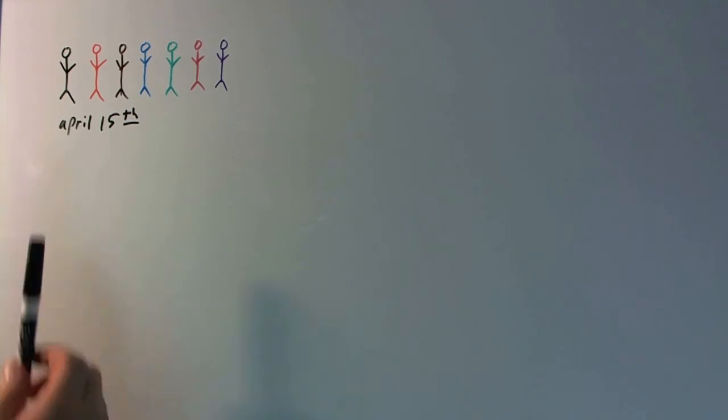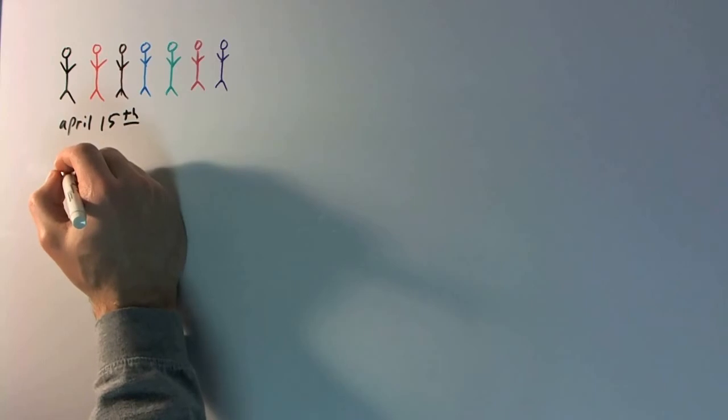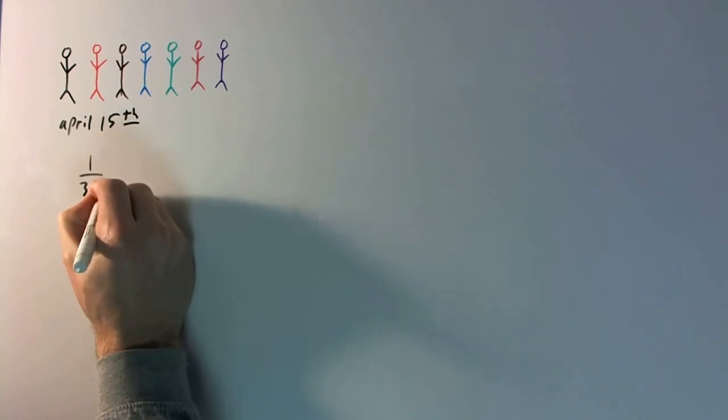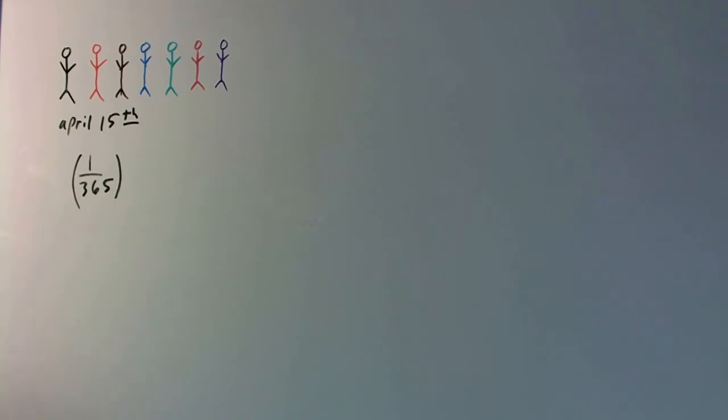So what's the probability that the first guy here has a birthday on April 15th? Well, it's only one day out of the entire calendar year, 365 days, so therefore the probability will be one out of 365. Big shock right there. So the probability that this guy has a birthday on April 15th is going to be one out of 365. That was easy.